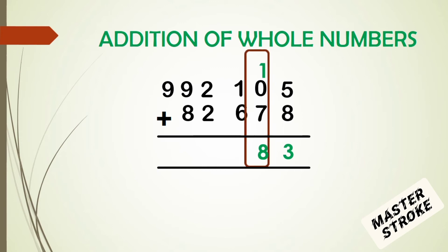We move to the hundreds column. We have 1 plus 6, which gives us 7. We write 7. There is nothing to be carried forward.